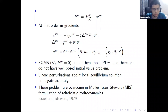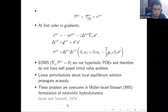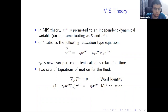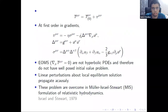First-order hydrodynamics is also called Navier-Stokes hydrodynamics. However, the Navier-Stokes equations are not hyperbolic PDEs and do not have a well-posed initial value problem. Linear perturbations about equilibrium solutions propagate faster than the speed of light. These problems are overcome in the MIS formulation of hydrodynamics, where pi^{mu nu} is promoted to an independent dynamical variable satisfying an additional equation.